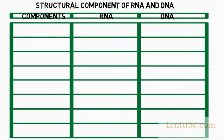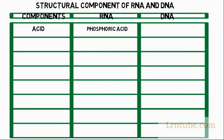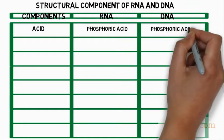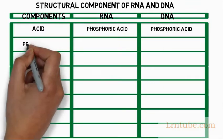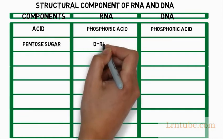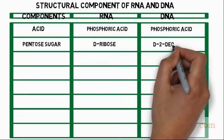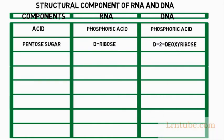When we pick a component, phosphoric acid, under RNA and DNA they are both going to have phosphoric acid. Under pentose sugar, RNA will have D-ribose and DNA will have D2-deoxyribose.